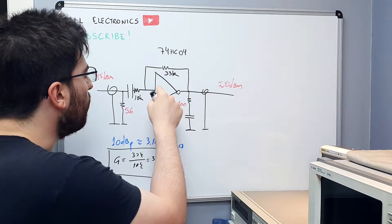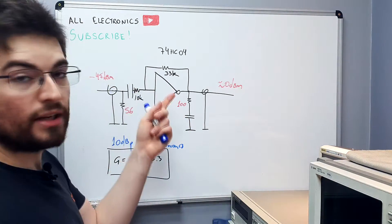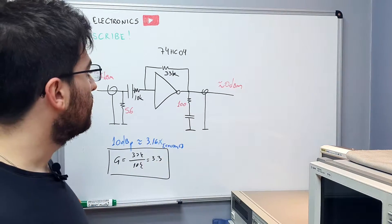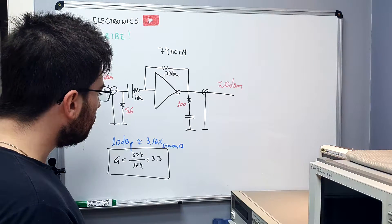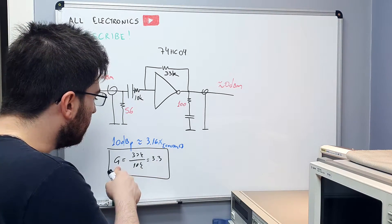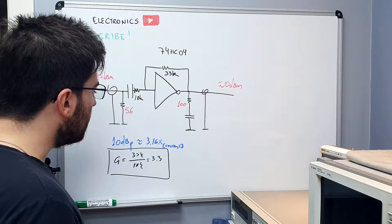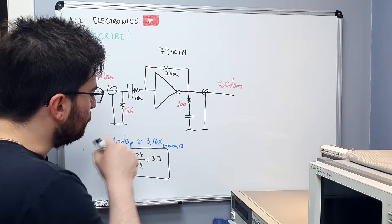And we know that the open loop gain is not infinite here. It is almost 200. So the 200 open loop gain will decrease the closed loop gain. And I think we're gonna get something close to 3.16.